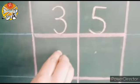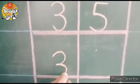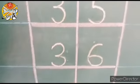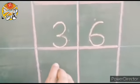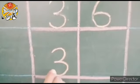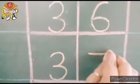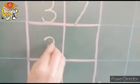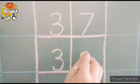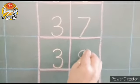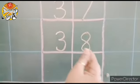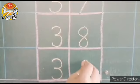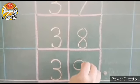After that? 36. After that? 37. After that? 38. And what comes after 38 children? 39.